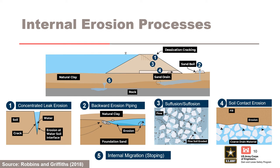Hydraulic gradients. The hydraulic gradient influences the likelihood of initiation and in some cases progression of each of the five internal erosion processes. For concentrated leak erosion, it is used to estimate hydraulic shear stress for initiation. For backward erosion piping, it includes vertical exit gradient for initiation and horizontal gradient for progression. For suffusion, it includes exit gradient for initiation. For soil contact erosion, it is used to estimate D'Arcy velocity for initiation. For internal migration, a vertical downward gradient is required.